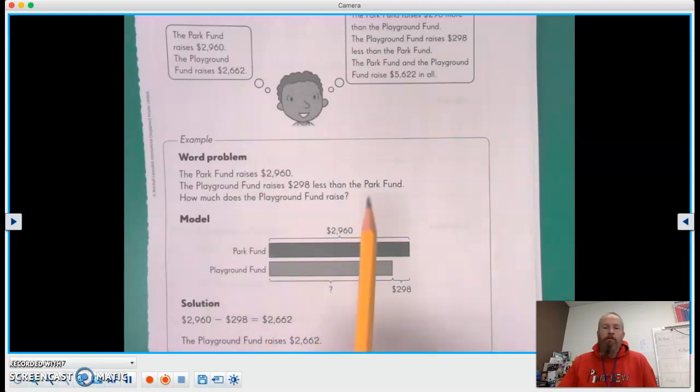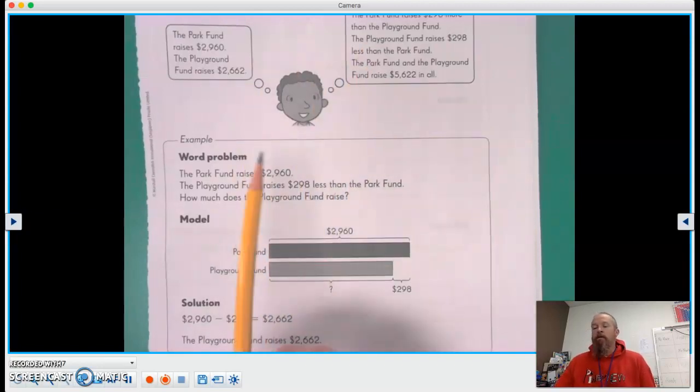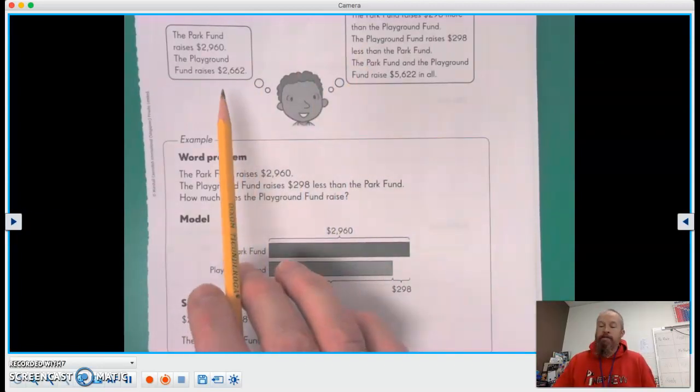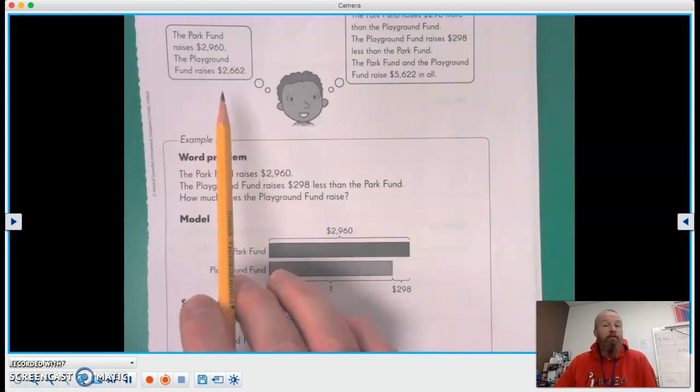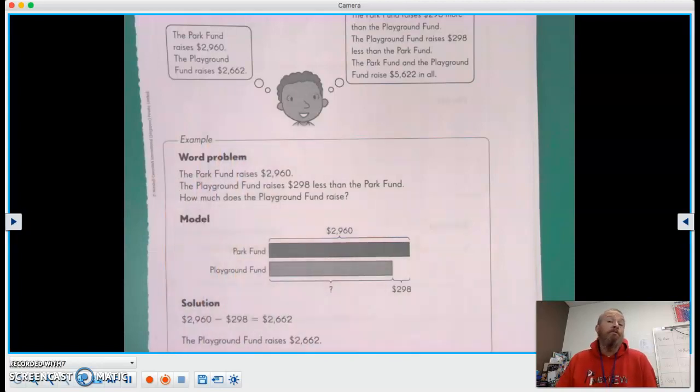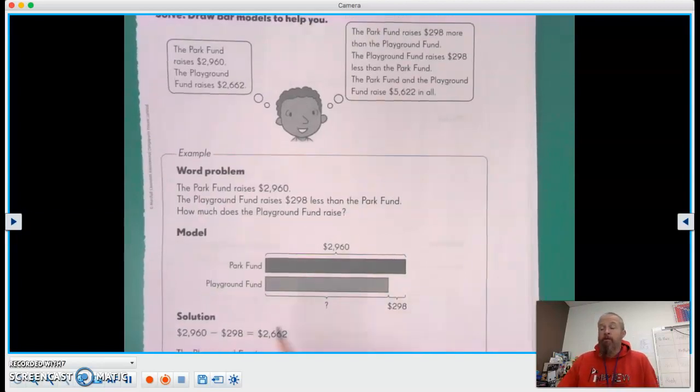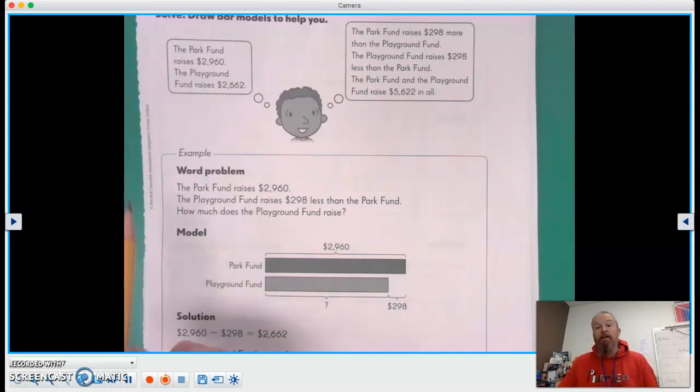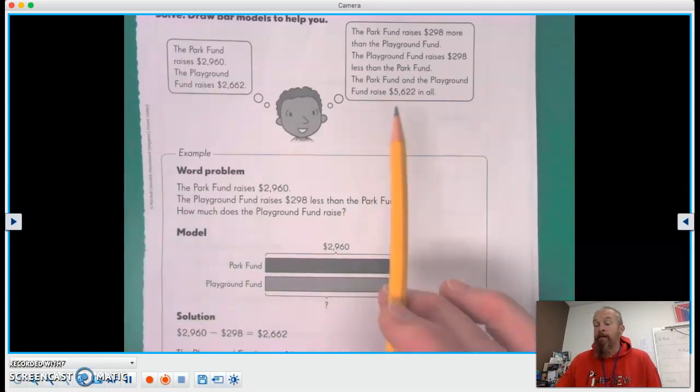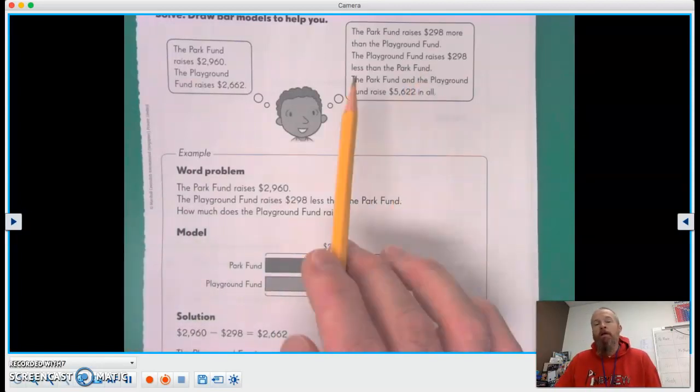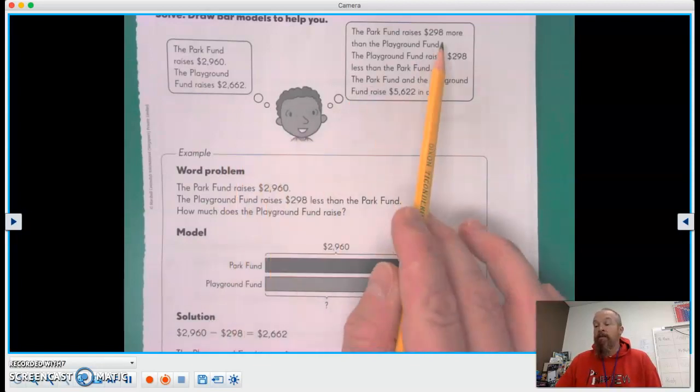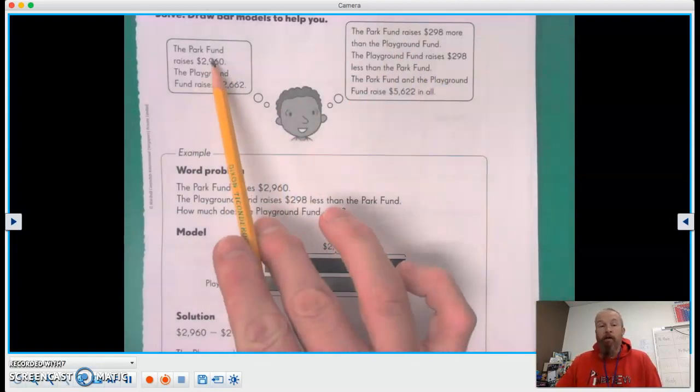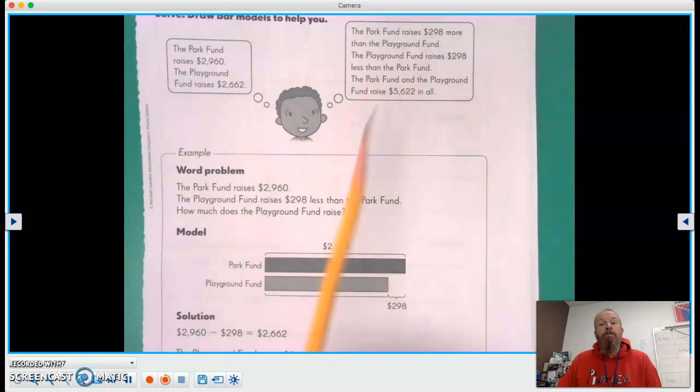Here's an example of one, and you can see the little boy's thinking here. The park fund raises $2,960, the playground fund raises $2,662, park fund raises $298 more than the playground fund. So this person's already done the math for this, right? They've already figured out that the difference between the park fund and the playground is $298.